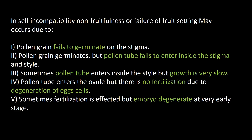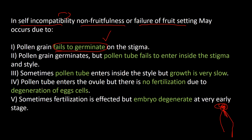How does self-incompatibility or failure of fruit setting occur? First, pollen grains that fall onto the stigma fail to germinate — even though the pollen grains fall, they fail to germinate. Second, even though the pollen grains do germinate, the pollen tube fails to enter the stigma.